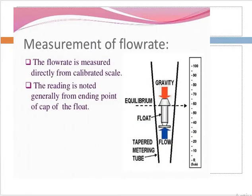We will now see a picture showing equilibrium and float movement. Flow rate is measured using a calibrated scale — we note the reading. From the end point to the cap of that tube, for each application we use different sizes of floats. When sized correctly, the flow rate can be determined by matching the float position to the calibrated scale, as shown in the figure.